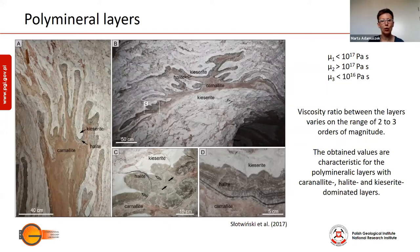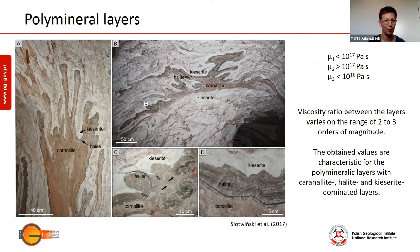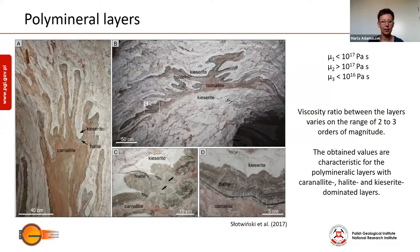The numerical results indicate viscosity variation on the range of 2 to maybe 3 orders of magnitude. However, when we look closer at our field data, we notice that the layers we model are not pure carnalite, halite, and kieserite layers. We observe white spots of kieserite within the carnalite layers and also red spots, probably of carnalite, found within kieserite layers. This means the obtained values are not characteristic for pure monomineralic layers, but more for these polymineralic layers where carnalite, halite, and kieserite minerals are dominant in individual layers.